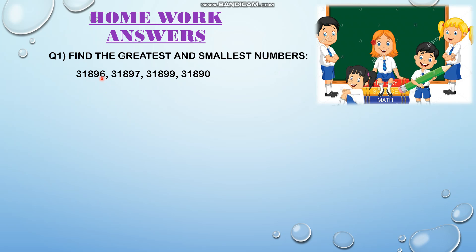So you have to check the last digit: that is 6, 7, 9, and 0. Now check which digit is the bigger one — that will be the greatest number, and which digit is smaller — that will be the smallest number. 9 is the largest digit, so 31,899 is the largest number. And 0 is the smallest digit, so 31,890 is the smallest number.